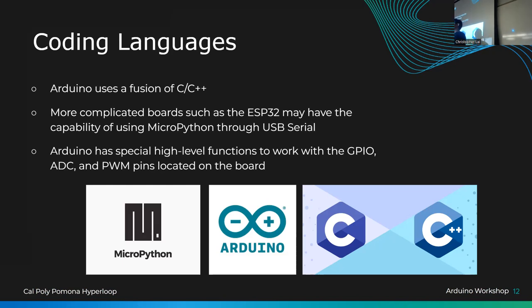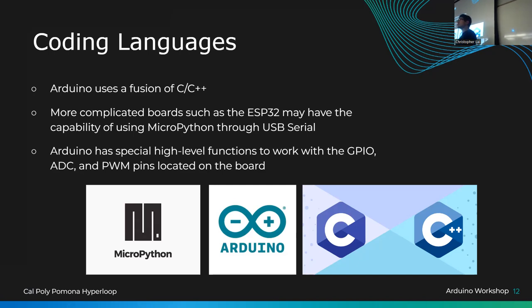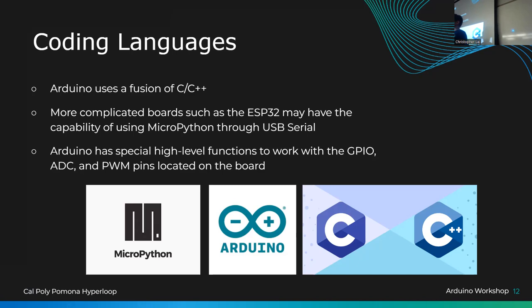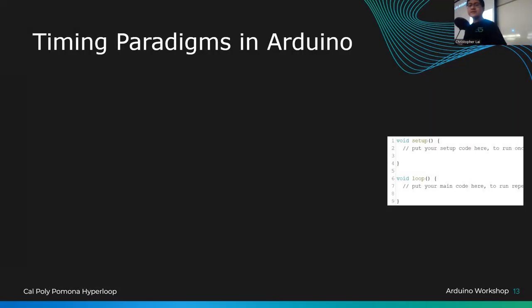If you've taken C for Engineers or any other coding class, you'll recognize that normal coding is just if-statements, loops, and functions. Arduino is the same, except now you also work with physical objects — input and output pins — to control something in the real world. That's interfacing: moving from software-based logic into the real world, which is why when you control the RC cars today, you'll physically use them with your programming skills.